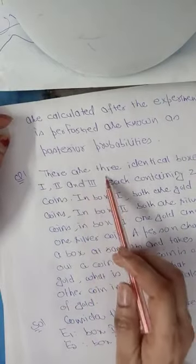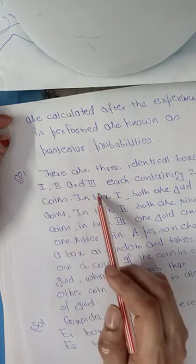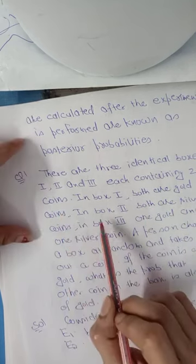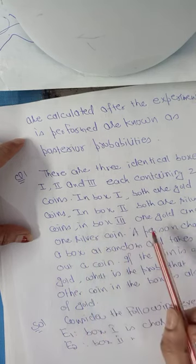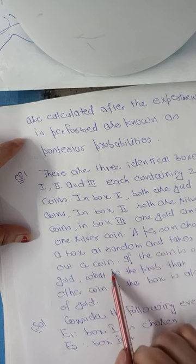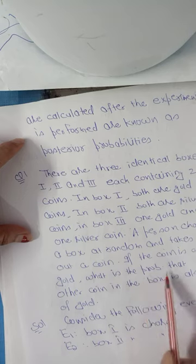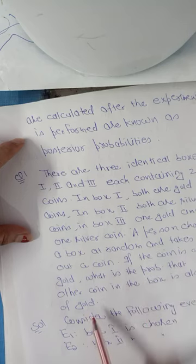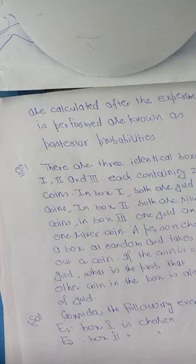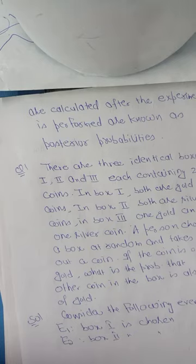First question: There are three identical boxes — one, two, and three — each containing two coins. In box one, both are gold coins. In box two, both are silver coins. In box three, there is one gold and one silver coin. A person chooses a box at random and takes out a coin. If the coin is gold, what is the probability that the other coin in the box is also gold?